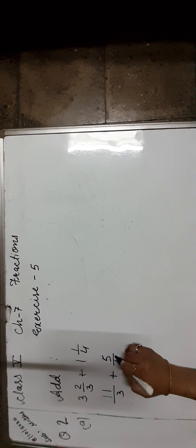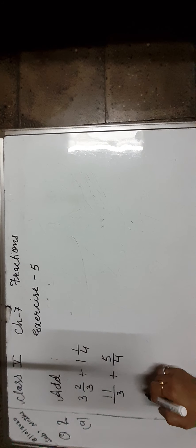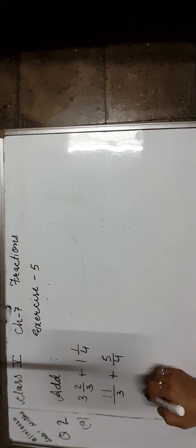Now question number 2 is: add 3 and 2 upon 3 plus 1 and 1 upon 4. First we convert the mixed fraction into an improper fraction. So it should be 11 upon 3 plus 5 upon 4. Only like fractions can be added or subtracted. If they are unlike fractions, we have to convert them into like fractions.